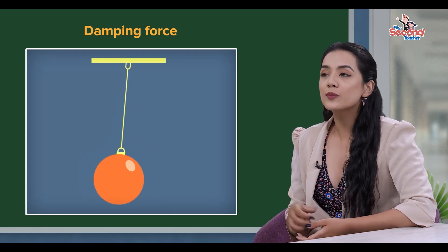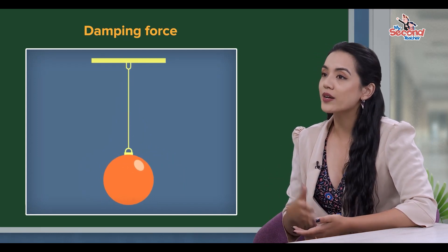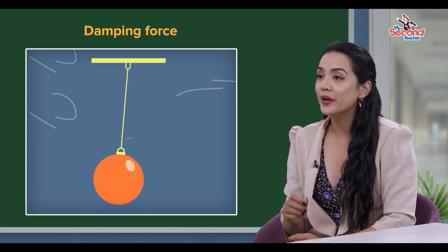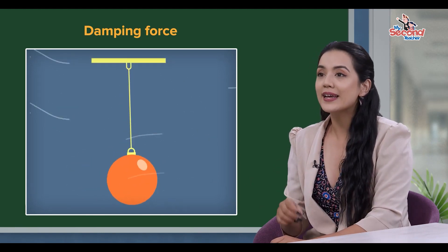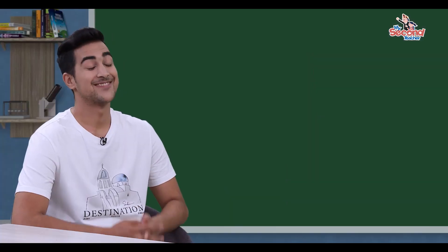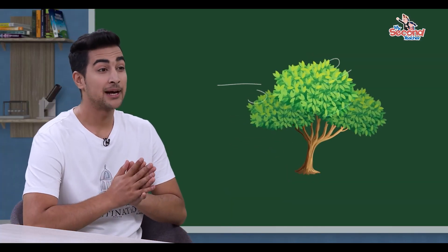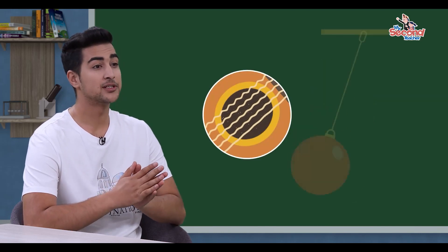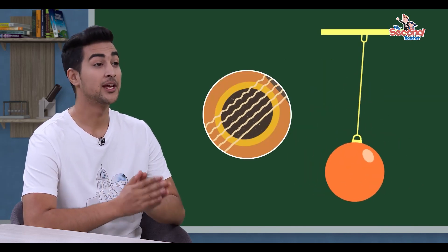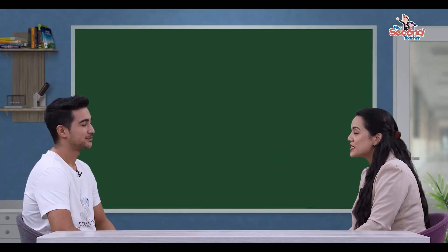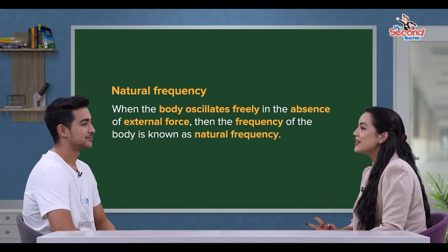Damping force: when the system oscillates in the presence of air, the amplitude of the oscillations will decrease over time. For example, a string vibrating or a pendulum swinging will also be damped. The damping force and the natural frequency are both important concepts.